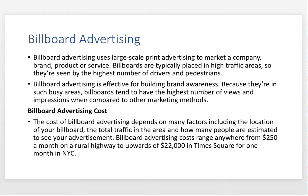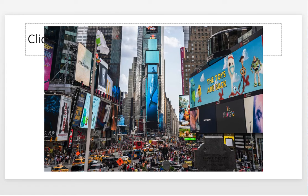As far as costs go, the cost of billboard advertising depends on many factors, including the location of your billboard — probably number one — and the total traffic in the area and how many people are estimated to see your ad. Billboard advertising costs range from about $250 a month on a rural highway, say in Oklahoma or Montana, up to about $22,000 a month in Times Square in New York City. And on the right here, 'Toys Are Back' is the type of billboard we'll be working on. A lot of these are electronic now, though there's still some print advertising too.